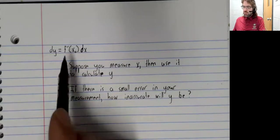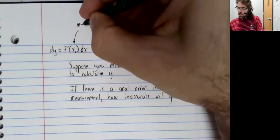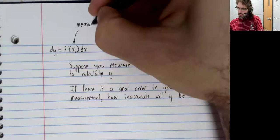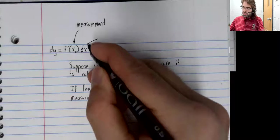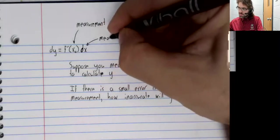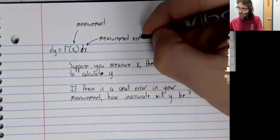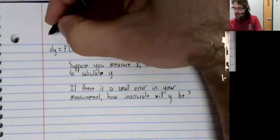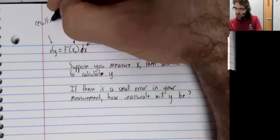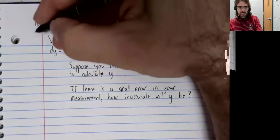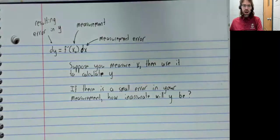Well, in terms of what we have here, X sub 0 is your measurement. dx is your measurement error. And dy is the resulting error in Y.